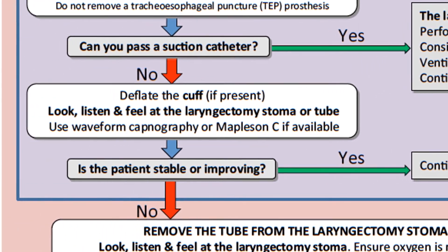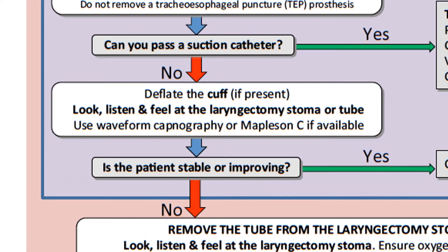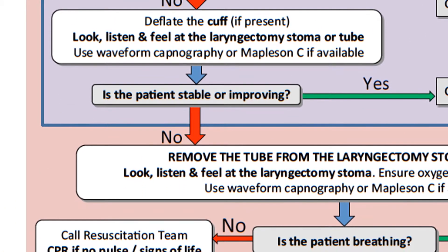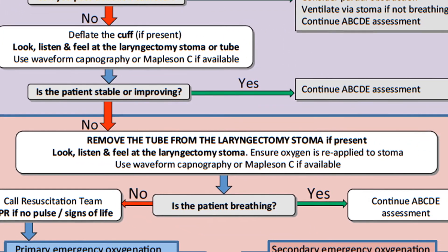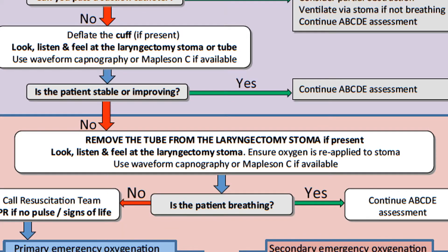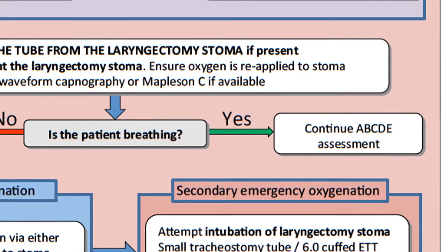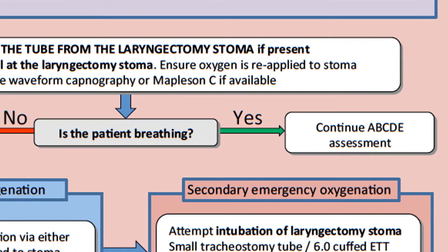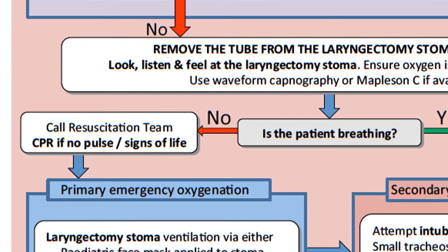If the suction catheter does not pass and deflating the cuff doesn't improve the patient's condition, then you will need to remove the tracheostomy tube from the laryngectomy stoma and reassess at the stoma with your look, listen and feel. Reapply oxygen to the stoma and use waveform capnography or the Mapleson C circuit in your assessment of breathing. If the patient is breathing, continue with your ABC assessment. If they are not breathing, assess for signs of life and start CPR if necessary.